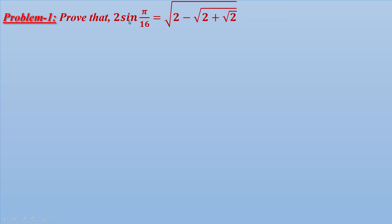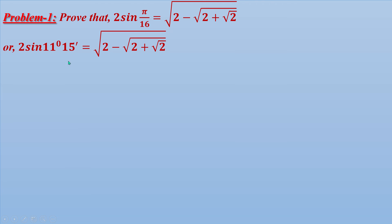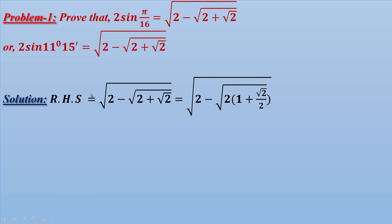Problem 1: Prove that 2sin(π/16) = √(2 - √(2 + √2)). Solution — right-hand side equals √(2 - √(2 + √2)). We can take 2 as a common factor inside, giving 1 + √2/2, because the 2 in the denominator divides in.